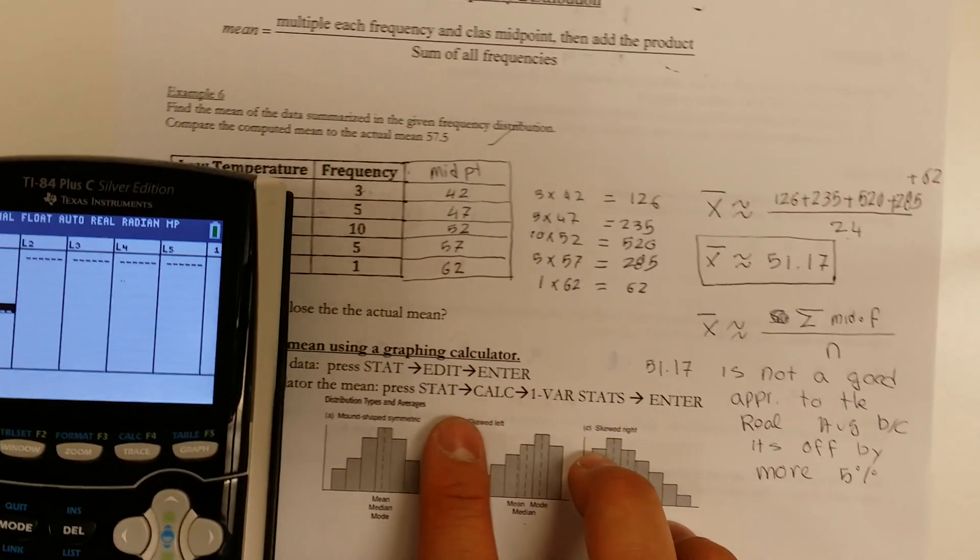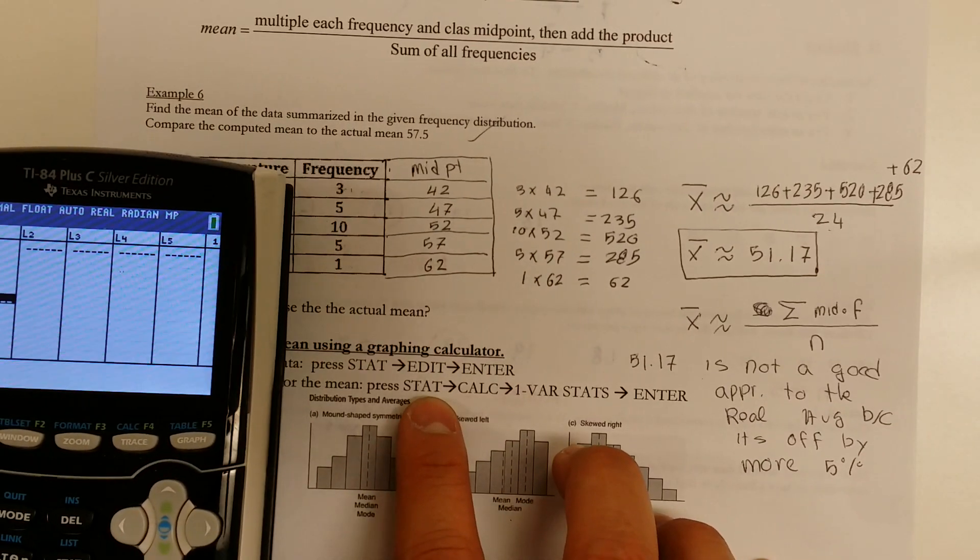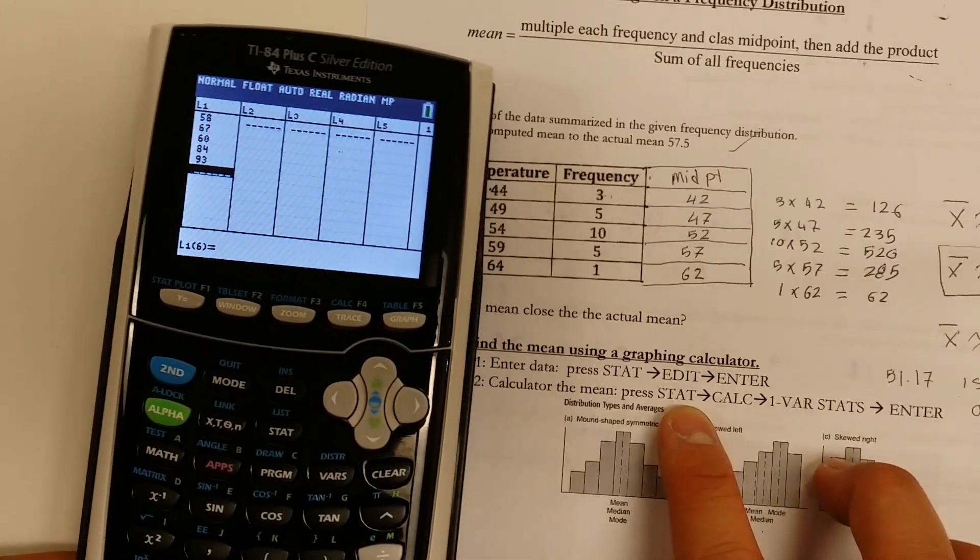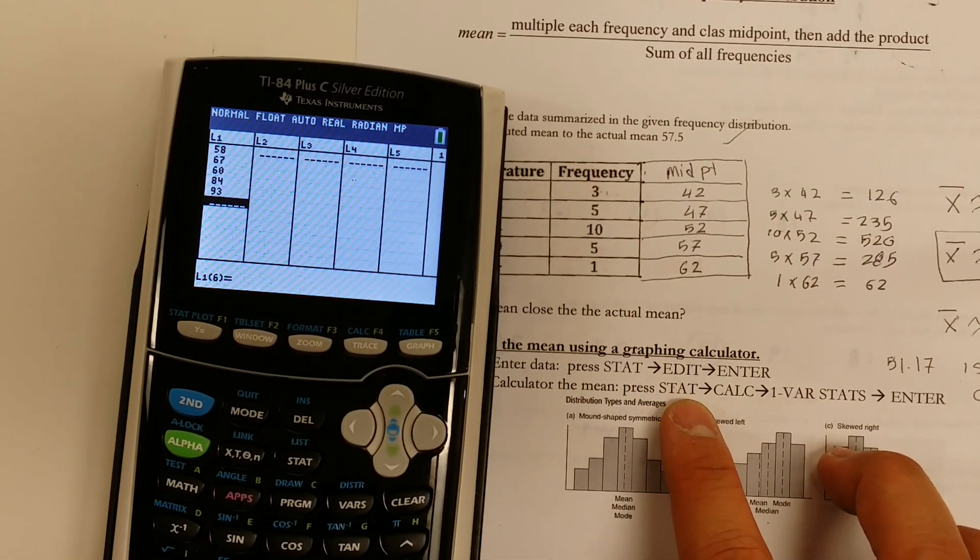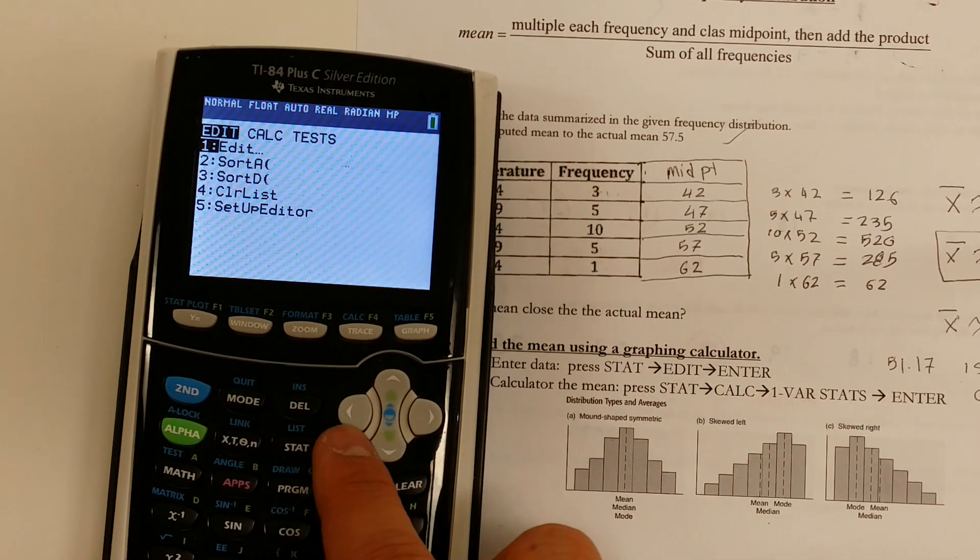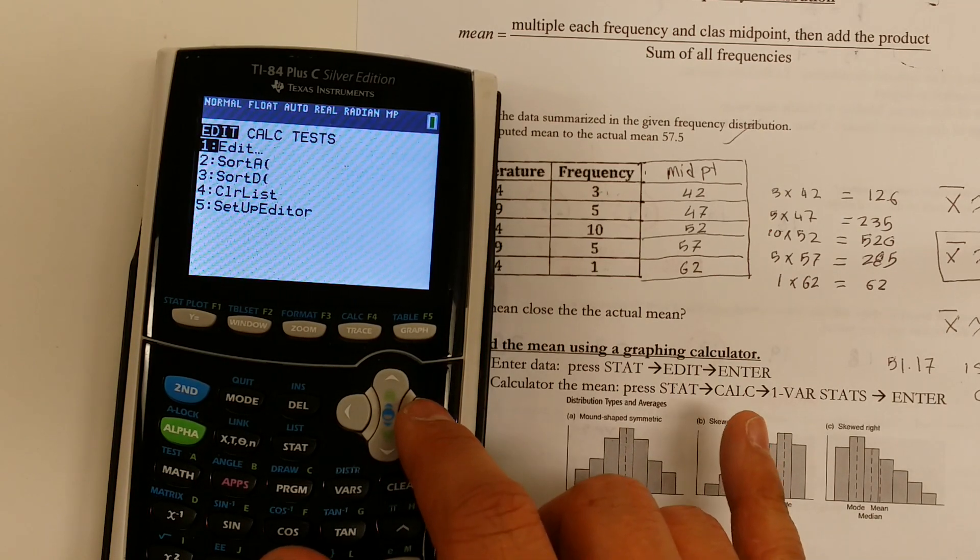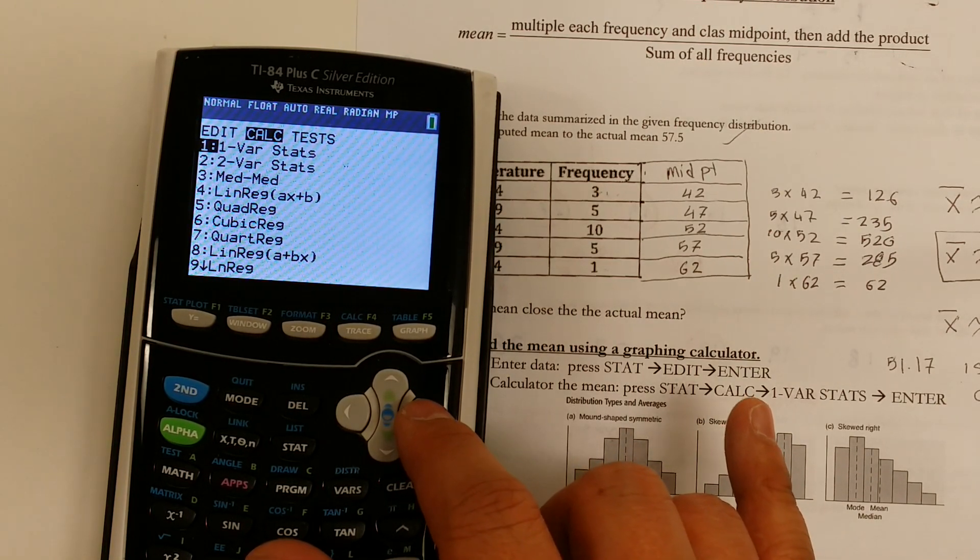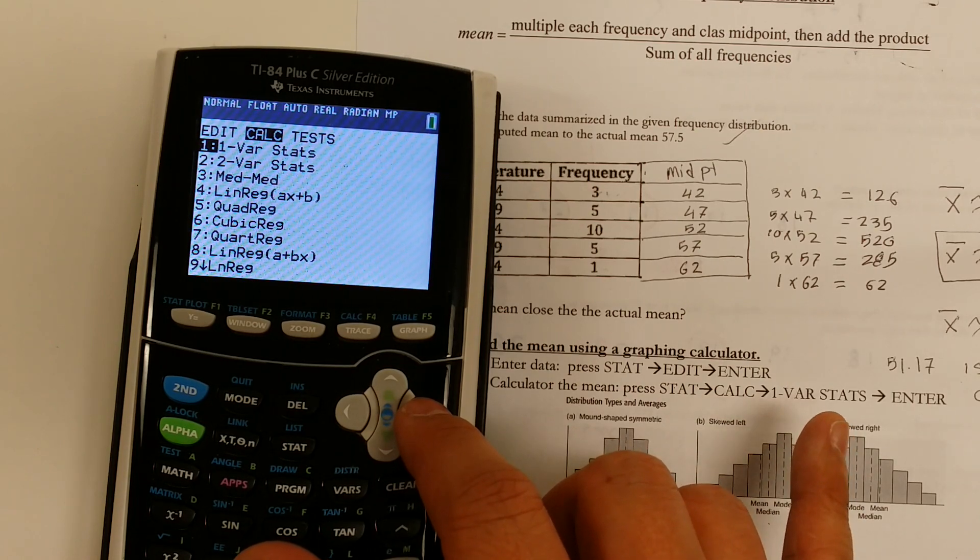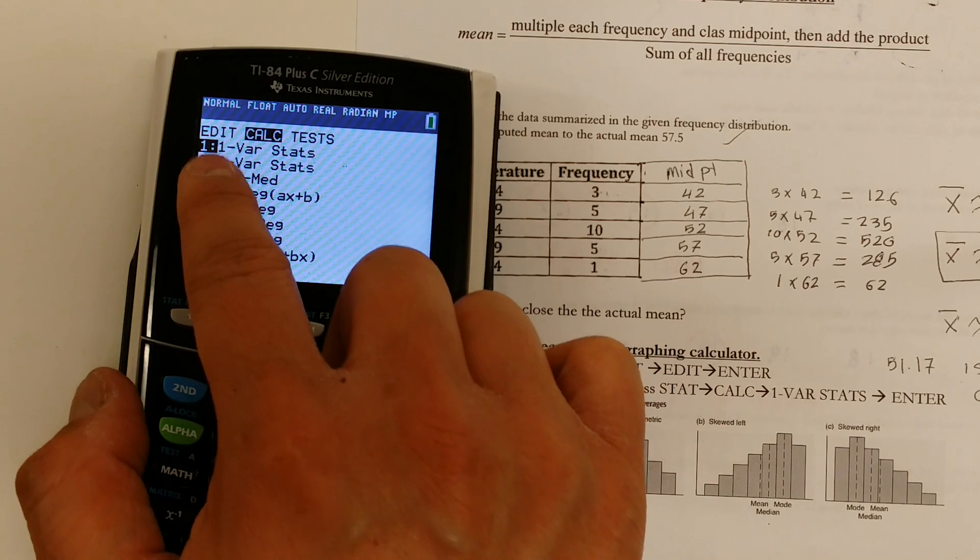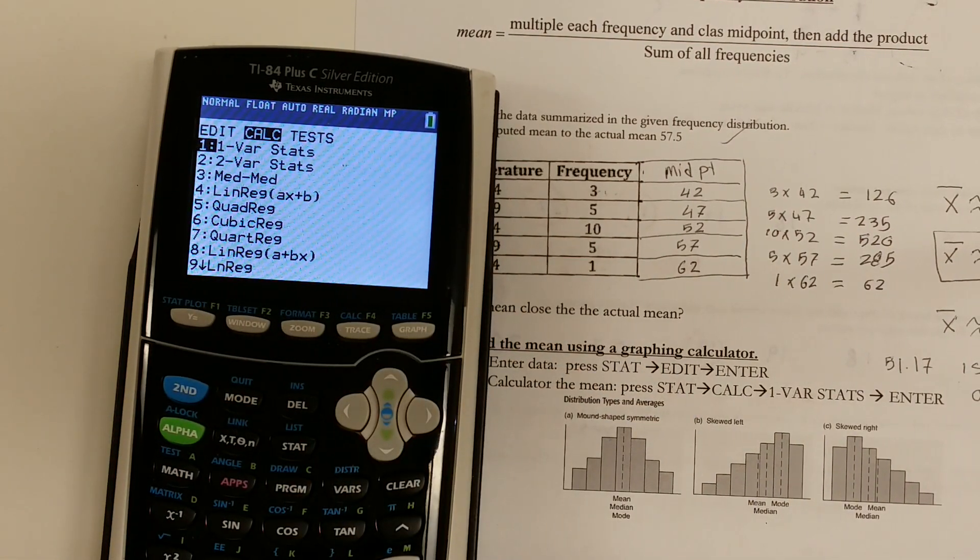Good. The next thing I want you to do, to ask the calculator to calculate the mean, is to push the stat button. So I'm going to slide over here. So stat, see how stat's right here? Stat. And then, slide over to calculate. You see how it says slide over to calculate? So you slide over to calculate. And then, you want to make sure that one var stat is highlighted, which it is. See how one var stat is highlighted? And then, all you have to do now is hit enter.